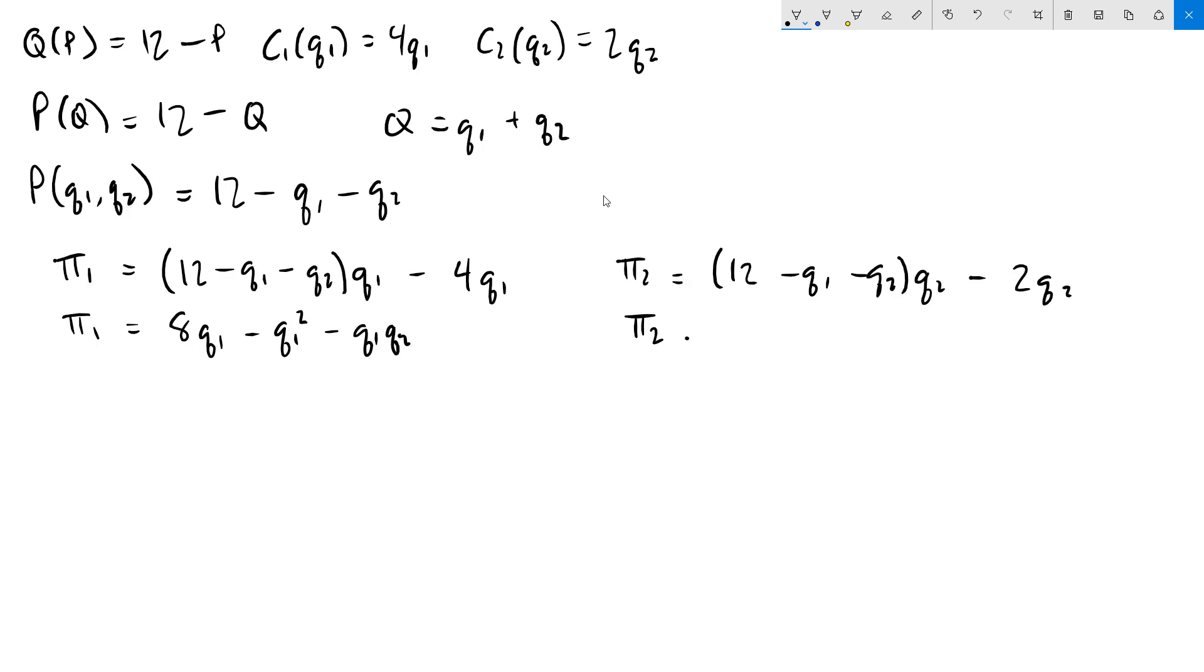Over here for firm 2, we can do the same thing. 12q2 minus 2q2 is 10q2. And then we have the rest of them, minus q1q2 minus q2 squared. Just cleaning this up a little bit to make the math easier later. We're now ready to take the first order conditions.